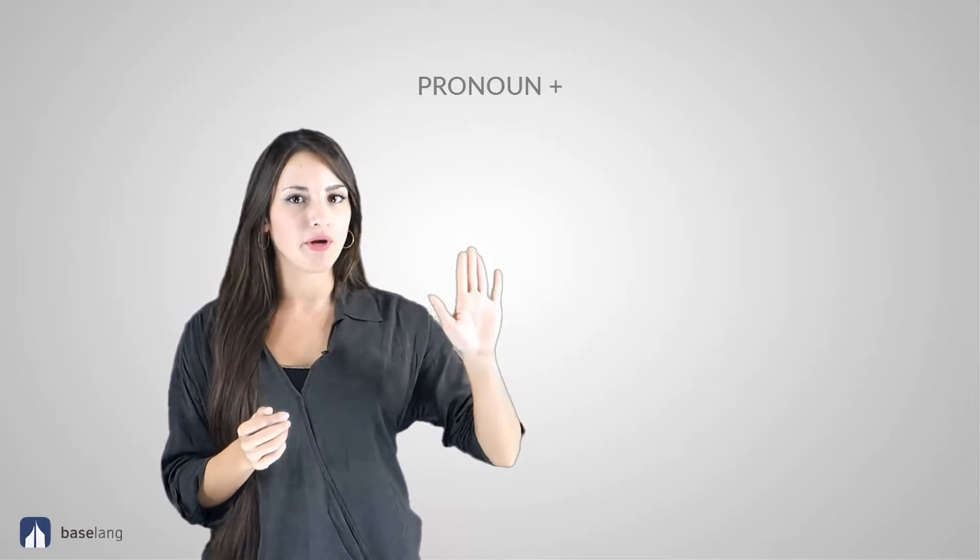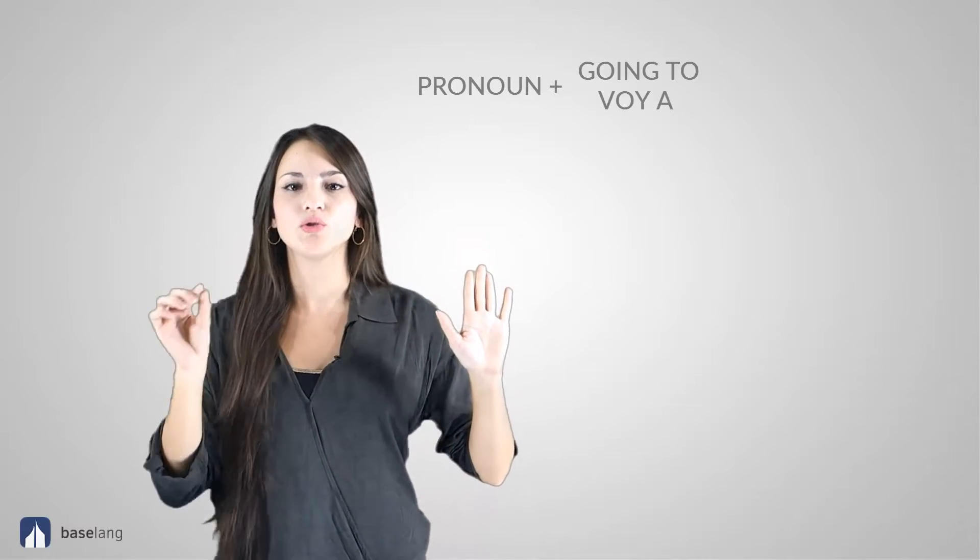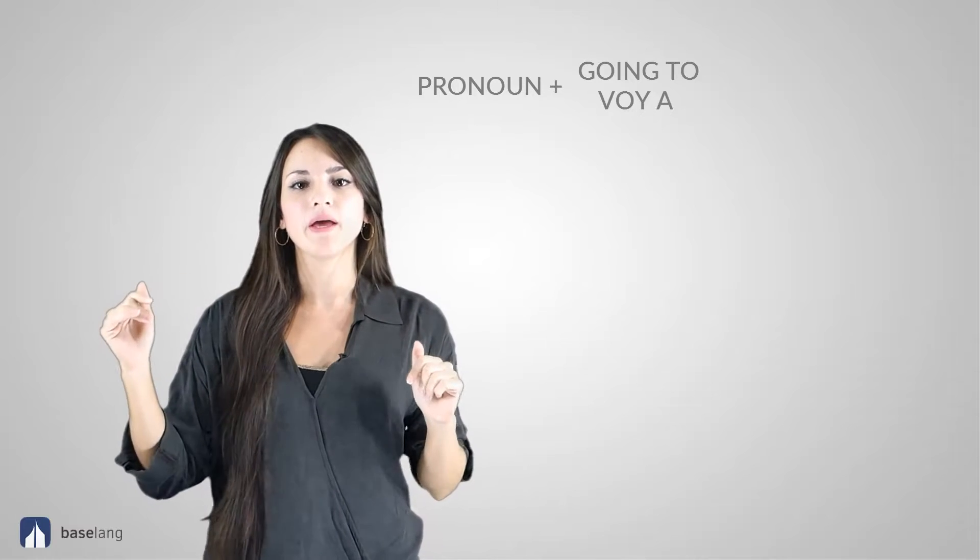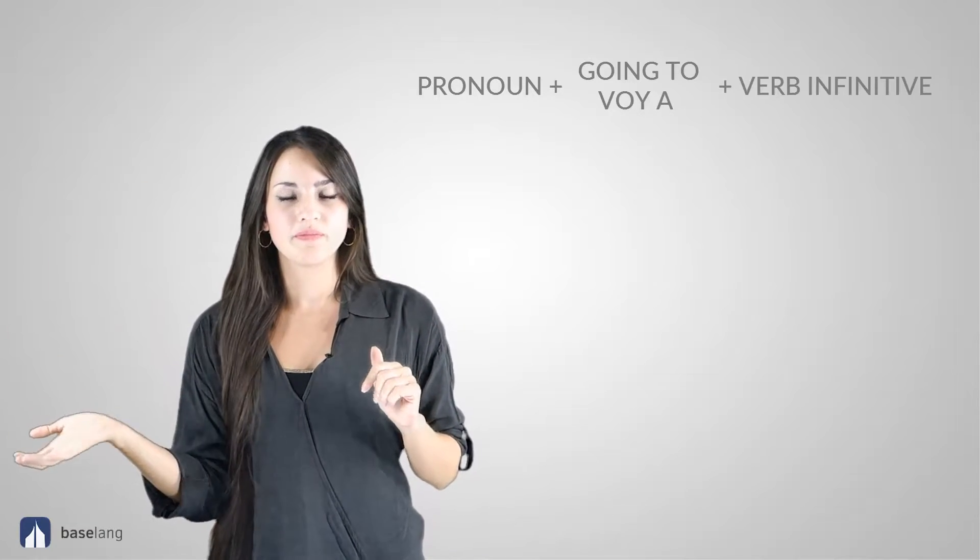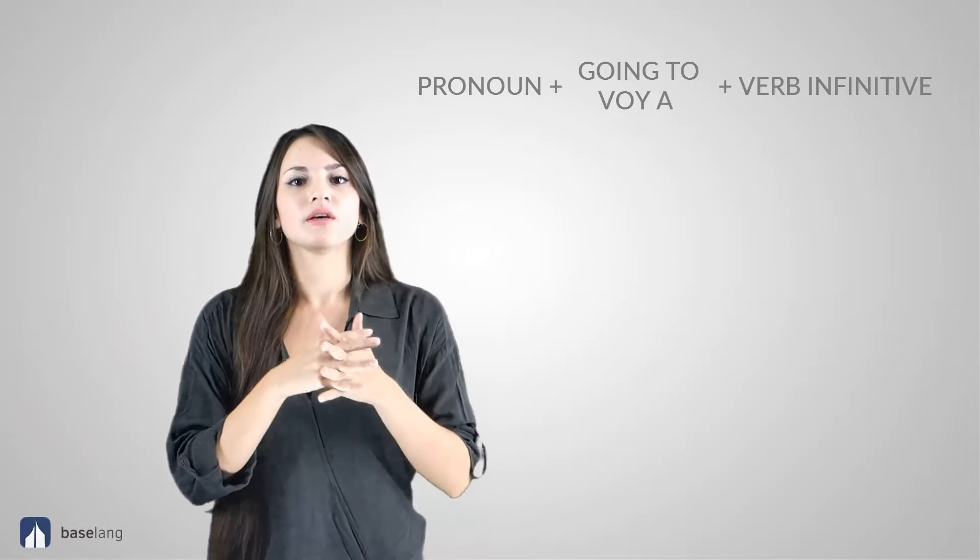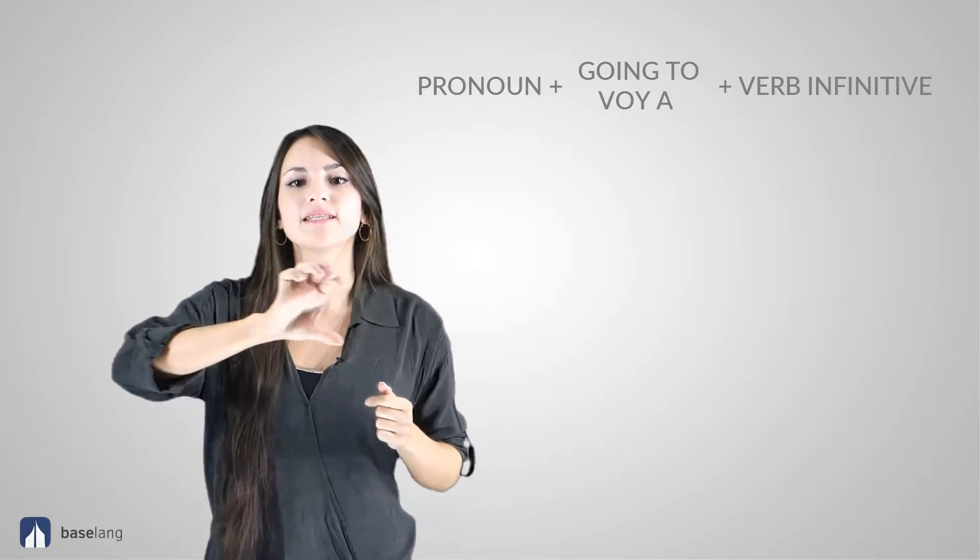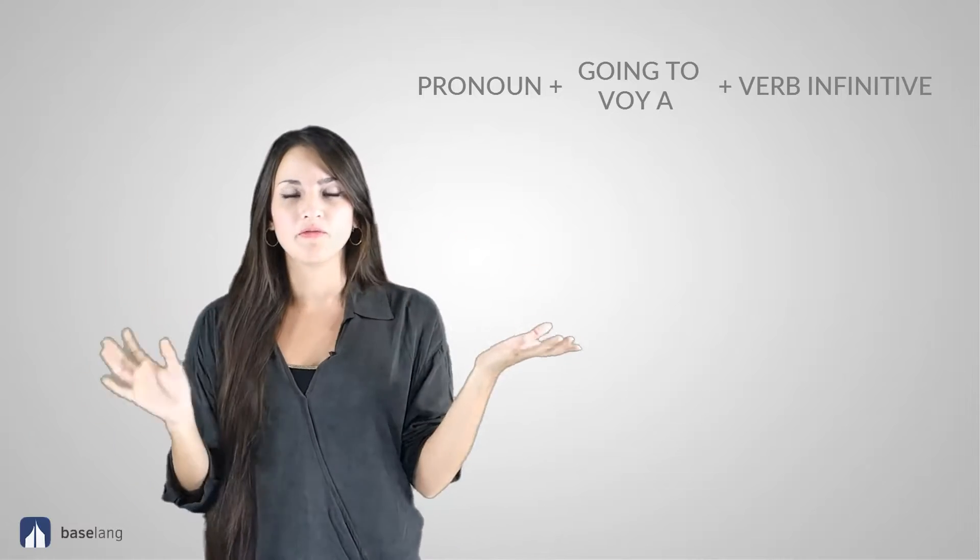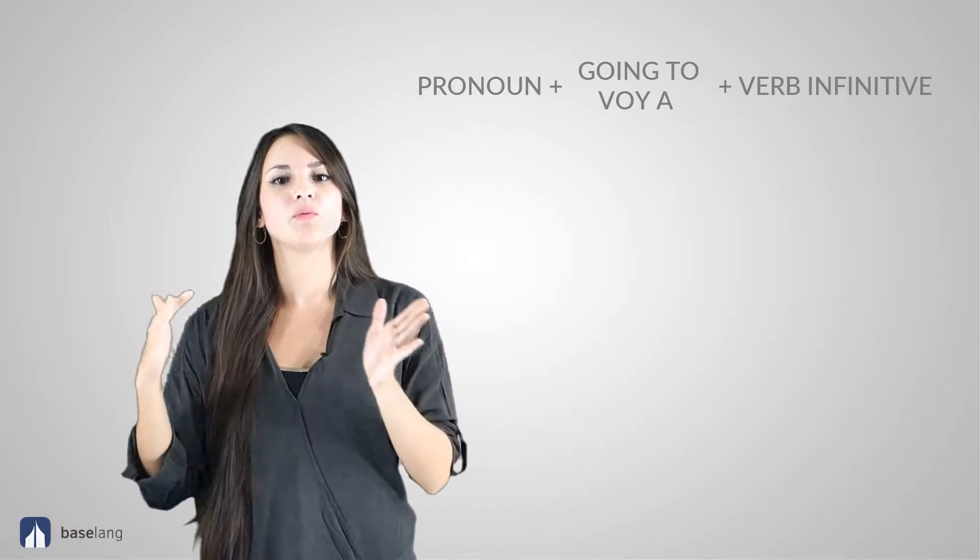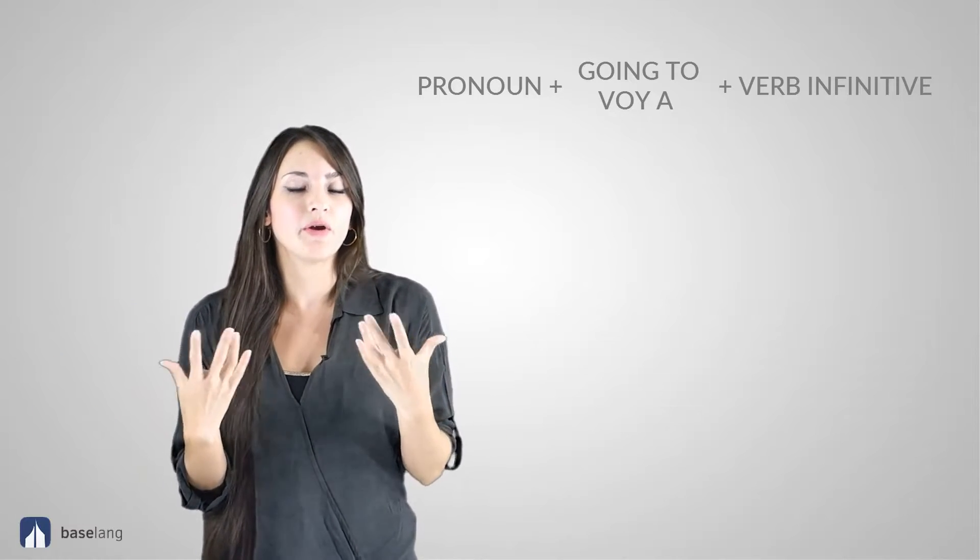Now let's see the structure or how it works, going to in Spanish. So first of all we have the pronoun, then we have going to, voy a, and then we have another verb in infinitive of course. So I'm going to give you a full example with a random verb like jugar, to play, so you can see better what I'm talking about.